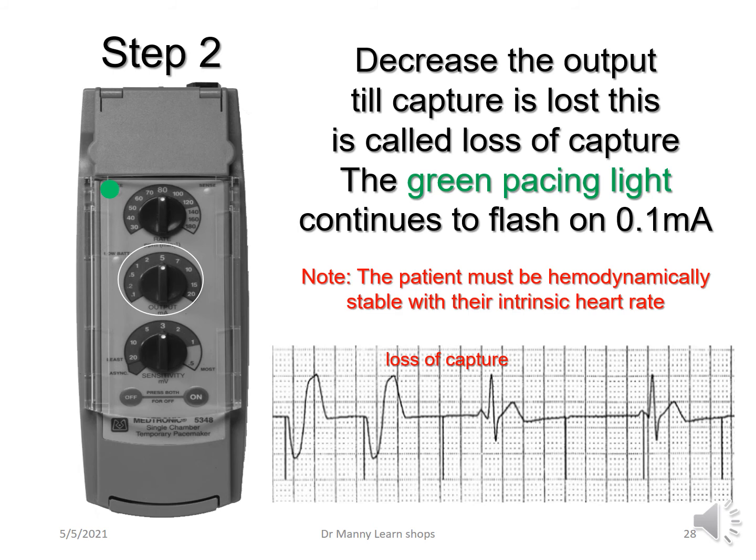In the rhythm strip now, you can still see the pacemaker spike but it's not causing any problems because it's at 0.1 milliamp — too low to capture. You can see the inherent heart rhythm at approximately 40 beats per minute. The blood pressure appears okay, and the patient confirms they feel fine, so they are hemodynamically stable.